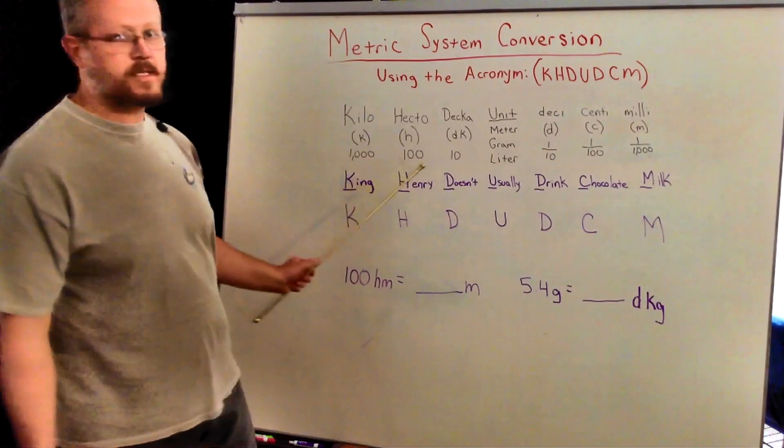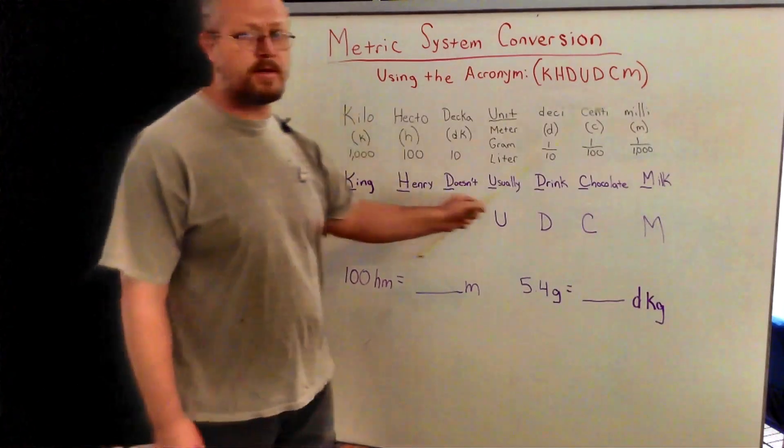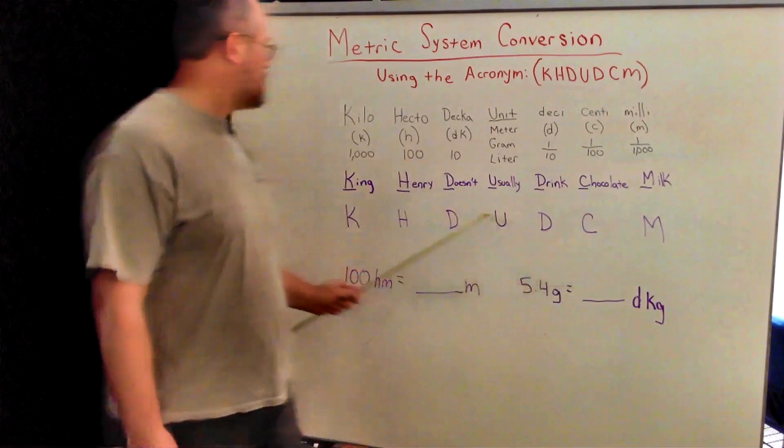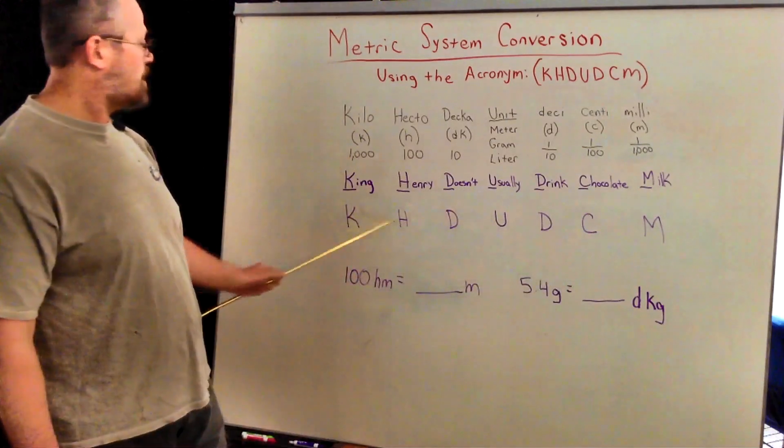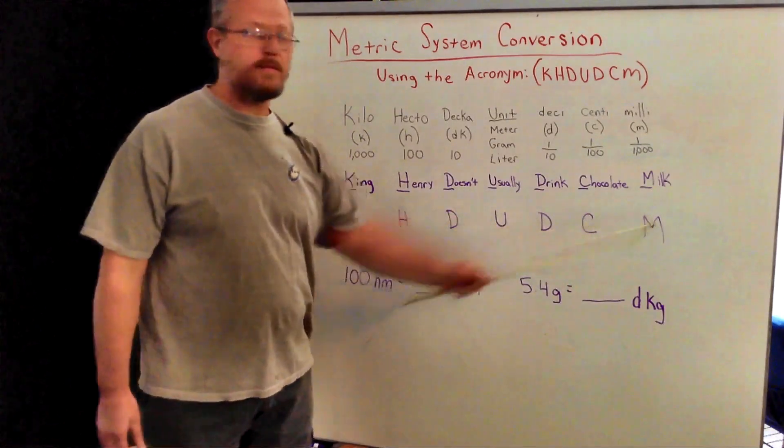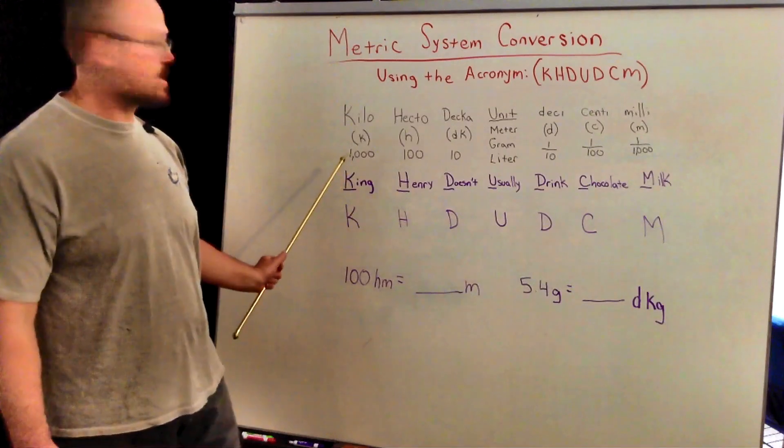So if you're in a timed test, it's really hard to write down all this. So what I recommend is just write down KHD UDCM.